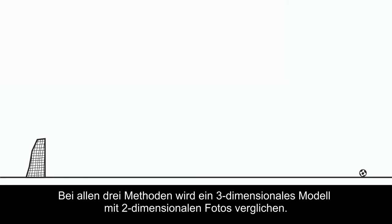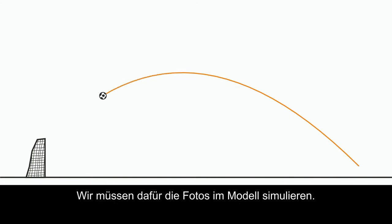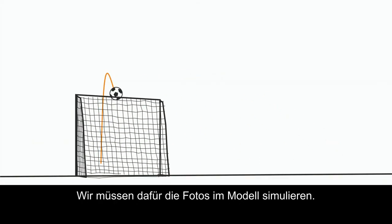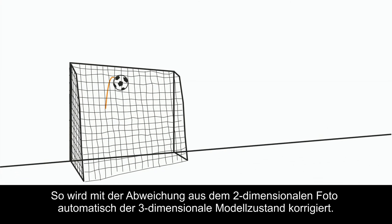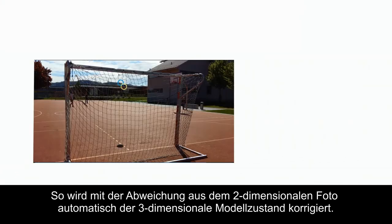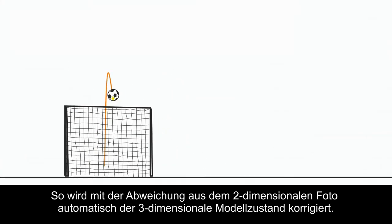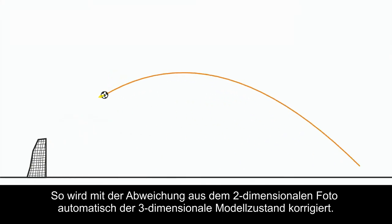All three methods require comparing a three-dimensional model with a two-dimensional photograph. The only way this can be done is to simulate the photograph inside the model. In this way, the correction determined on the two-dimensional photograph then automatically corrects the entire three-dimensional model state.